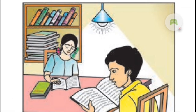Let's observe where they are sitting. They are sitting under a light. The name of the boy is Rajesh and the name of the girl is Pawani. They are sitting in their study room under a light. I will show you another image on the screen now.